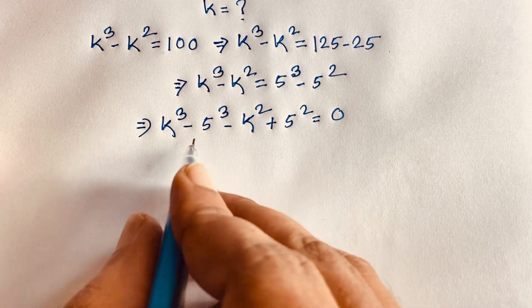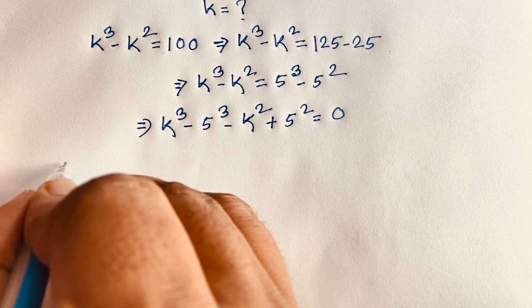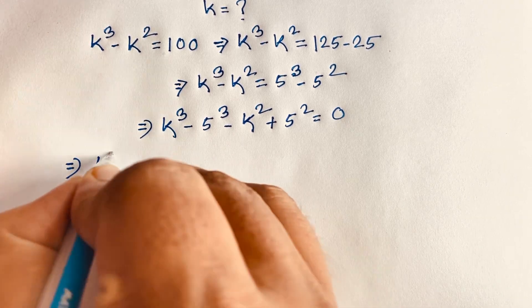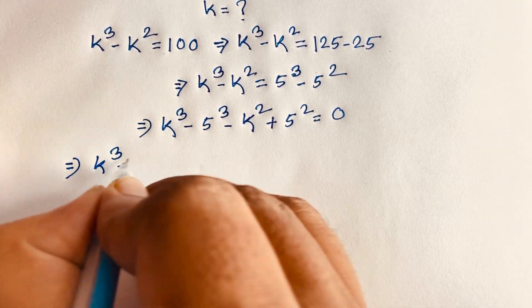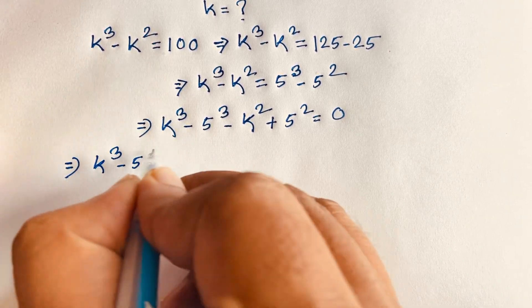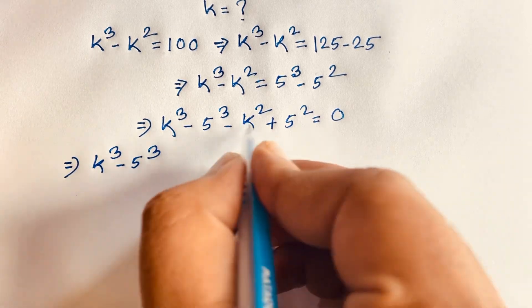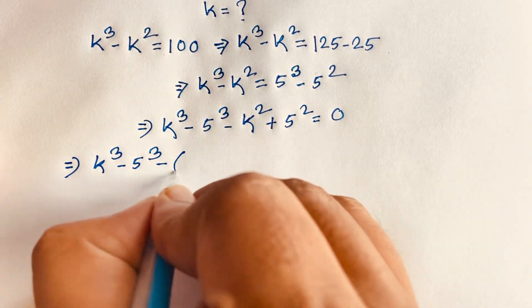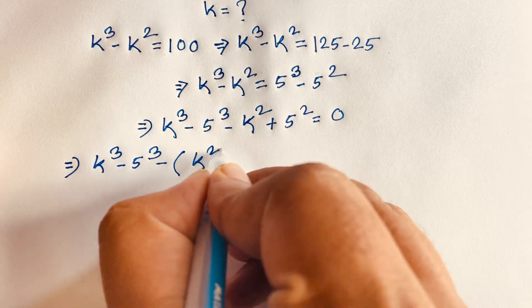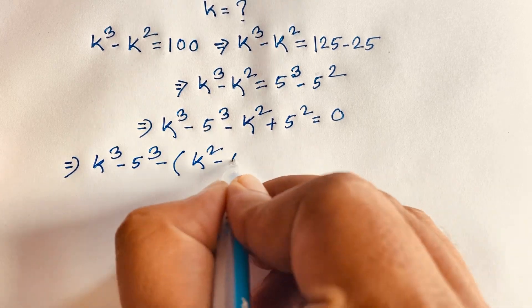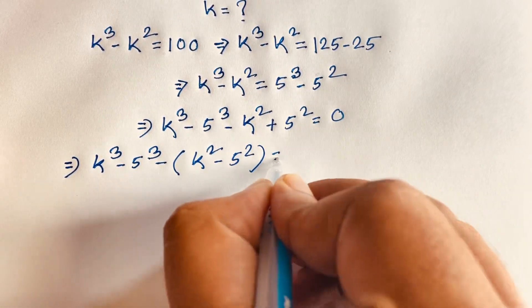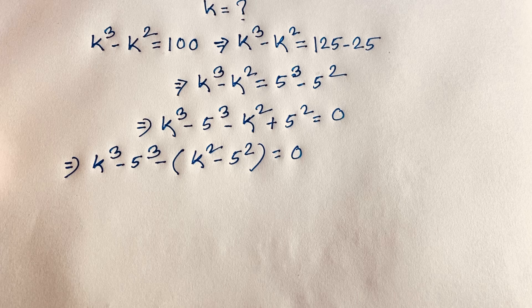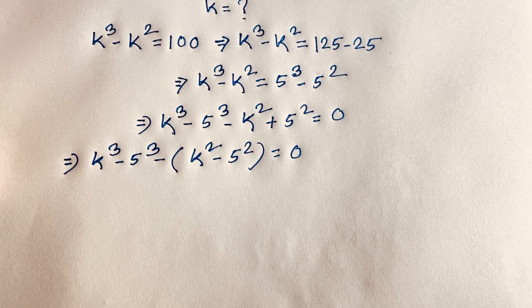Our equation is k³ minus 5³, and here minus is common, so it will be k² minus 5² is equal to 0.